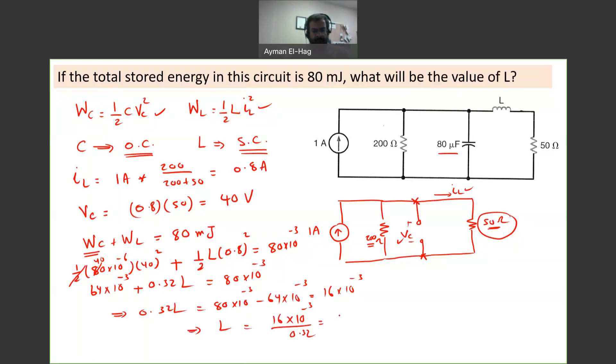So it's a very straightforward problem once you analyze it into small pieces. You need to find IL and VC first, find the energy stored in the capacitor, the energy stored in the inductor, and then see what is required in the question. So here the requirement was what is L so that the total energy stored is equal to 80 millijoules.